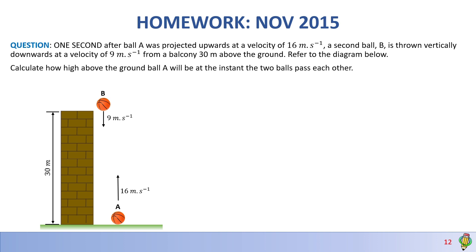It is a very nice and challenging question that I thought I'd do for you guys. It reads as follows: one second after ball A was projected upwards at a velocity of 16 meters per second, a second ball B is thrown vertically downwards at a velocity of 9 meters per second from a balcony 30 meters above the ground. Calculate how high above the ground ball A will be at the instant the two balls pass each other.